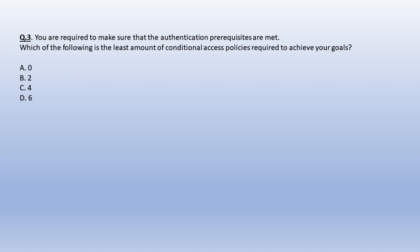Question 3: You are required to make sure that the authentication prerequisites are met. Which of the following is the least amount of conditional access policies required to achieve your goals? Options are: A. 0, B. 2, C. 4, D. 6. The correct answer is option B: 2.